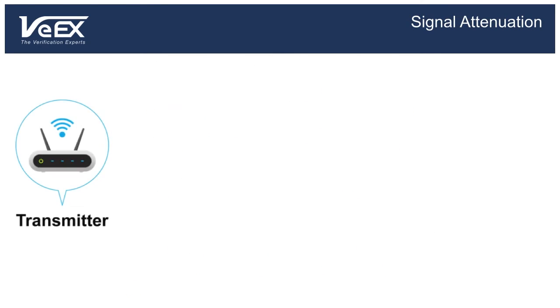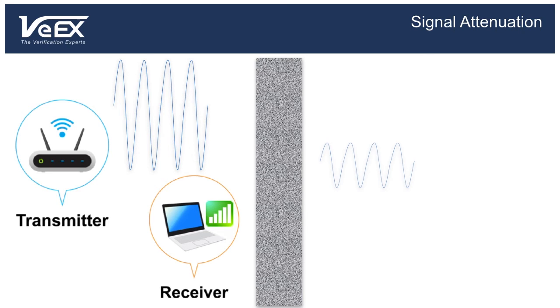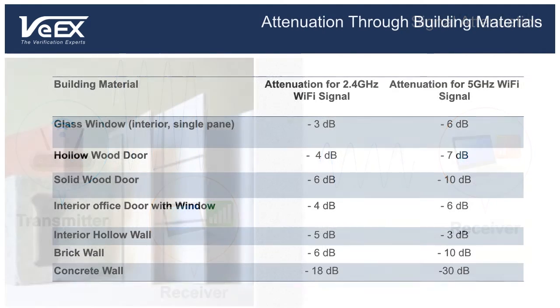A big contributor to the signal's degradation is the attenuation it experiences while traveling through obstacles. Walls, for example, decrease the signal strength and make it harder for the receiver to decode, decreasing your Wi-Fi operating range. The amount of attenuation depends on the obstacle's shape and what it's made of. This table shows how much signal attenuation you can expect from common building materials. Signal loss is measured in decibels, or dB for short.